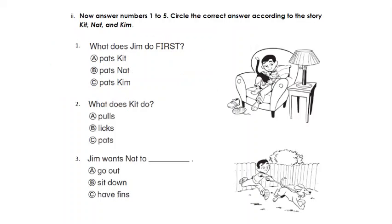Now answer numbers one to five. Circle the correct answer according to the story Kit, Nat, and Kim. So question number one: What does Jim do first? And there's a picture here to help you figure out the answer. Is it A, pats Kit, B, pats Nat, or C, pats Kim? If you still remember, Kit is the cat, Nat is the dog, and Kim is the fish. So look at the picture. First he talked or told us about his cat Kit, so the answer is pats Kit.